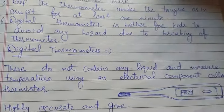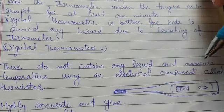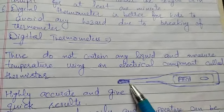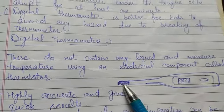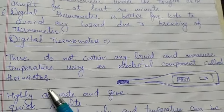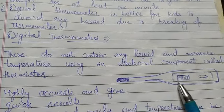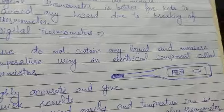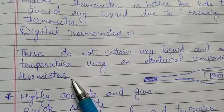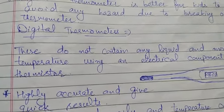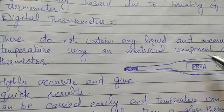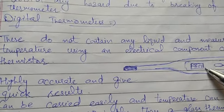Digital thermometers do not contain any type of liquid. They measure temperature using an electrical component called a thermistor. This is the bulb of the digital thermometer and the entire system works using a thermistor, which is a resistor based on temperature variations. When temperature changes, its resistance changes accordingly, and the temperature is displayed on the screen.